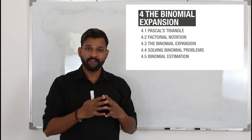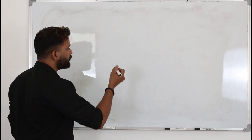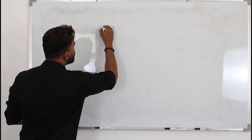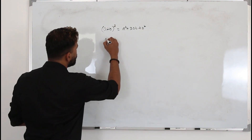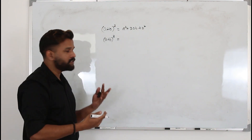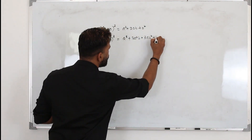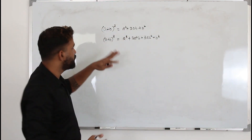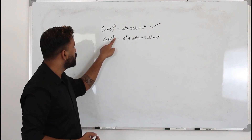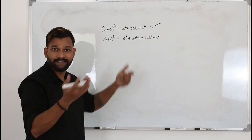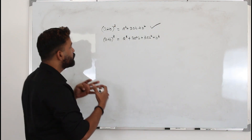4.3 is binomial expansion — a very important topic in this chapter. You must have learned the algebraic identity (a+b)² = a² + 2ab + b², and (a+b)³ = a³ + 3a²b + 3ab² + b³. But what if the power is a very large number — 4, 5, 6, 7? It becomes highly impossible to write out all the terms manually. That's where binomial expansion comes in.